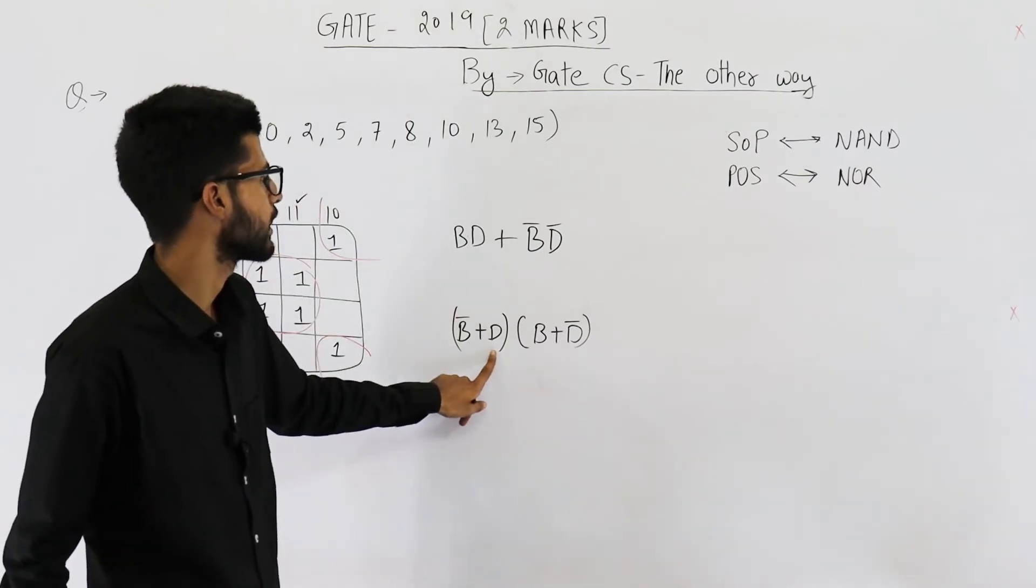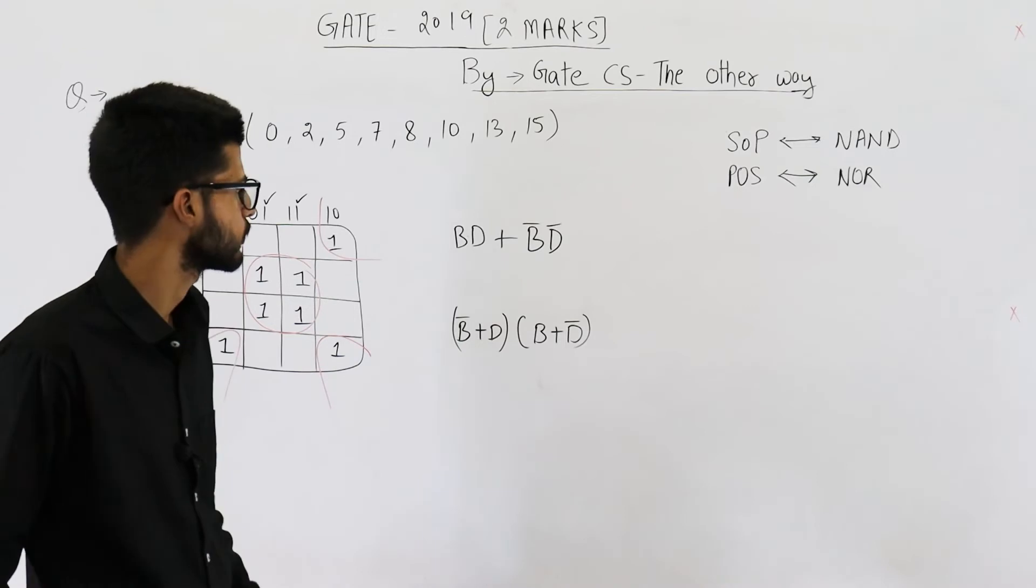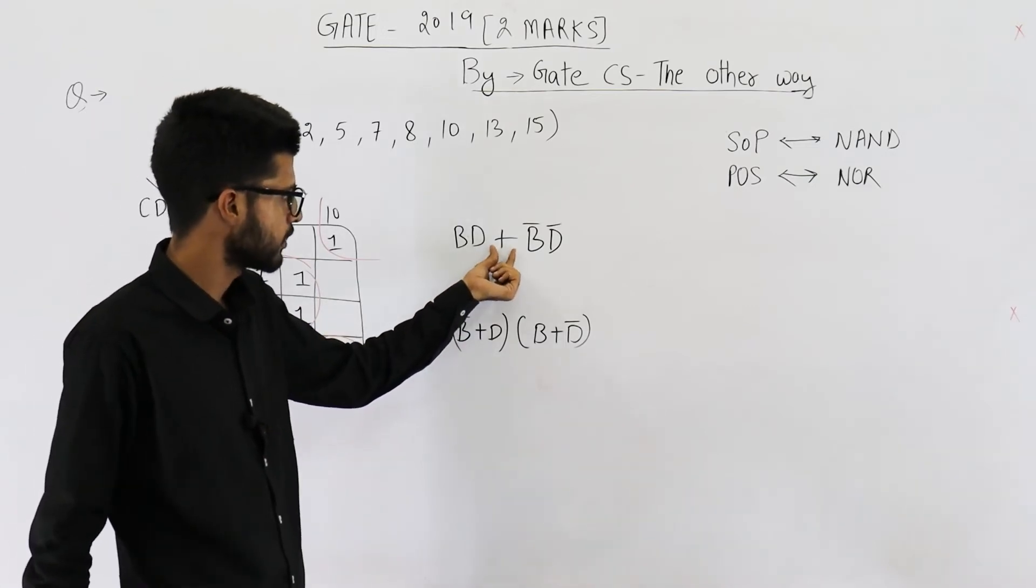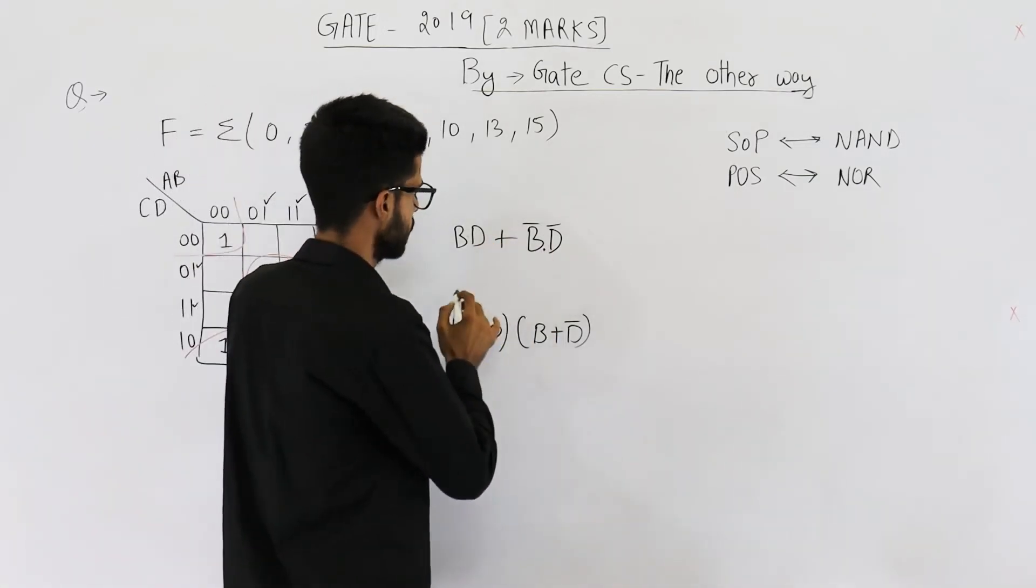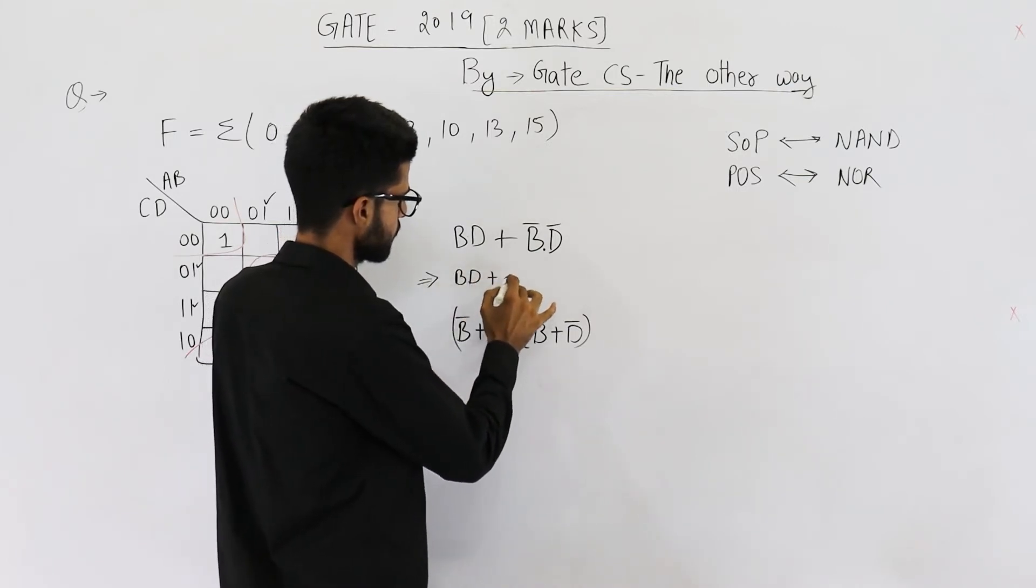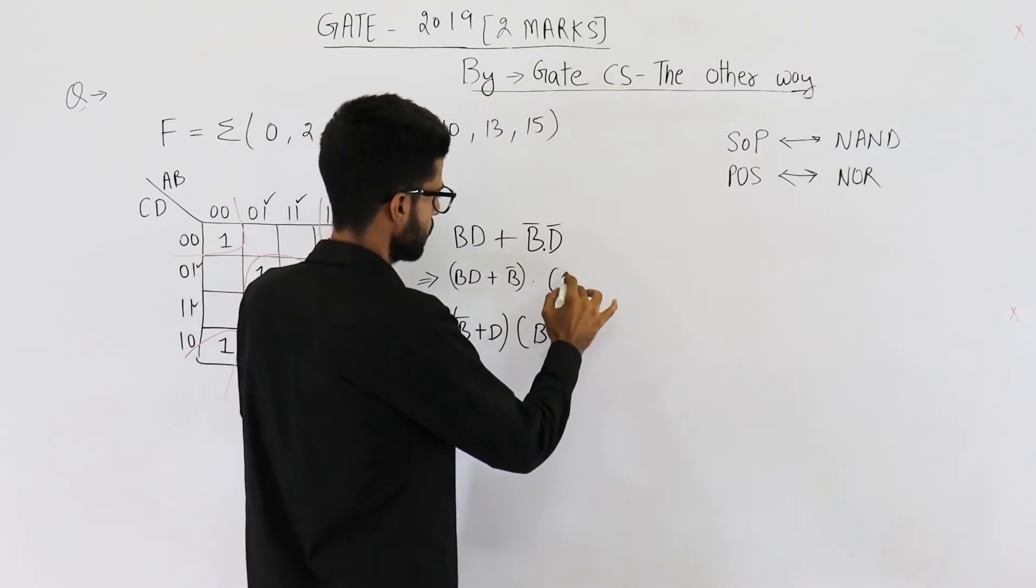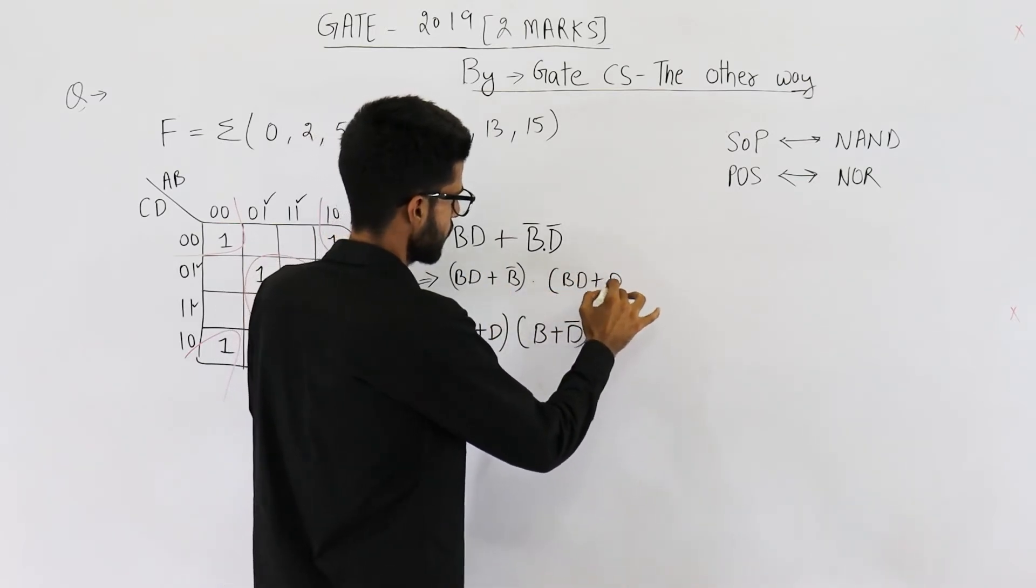So if you just open these brackets, you will get this back. How do I know that this is the POS form? You just distribute this plus over this and so you will get BD plus B bar dot BD plus D bar.